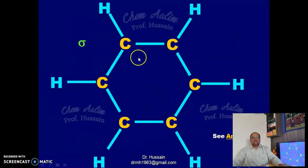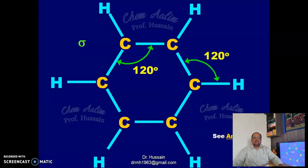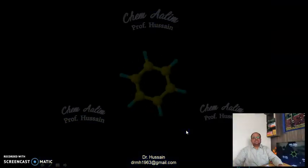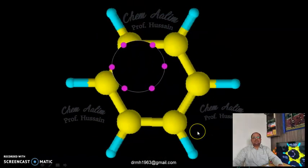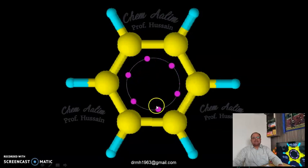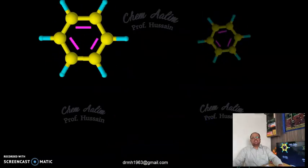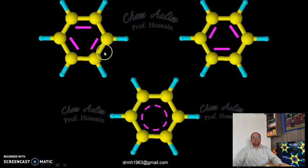The C-C bond angle and even the C-H bond angle in benzene is 120 degrees, because all carbon atoms are sp2 hybridized. Each carbon atom also has a pz orbital above and below the ring. These pz orbitals overlap sideways to form pi molecular orbitals that are delocalized throughout the ring — they are not localized between two carbon atoms. This delocalization is represented by two resonance structures with alternating single and double bonds.